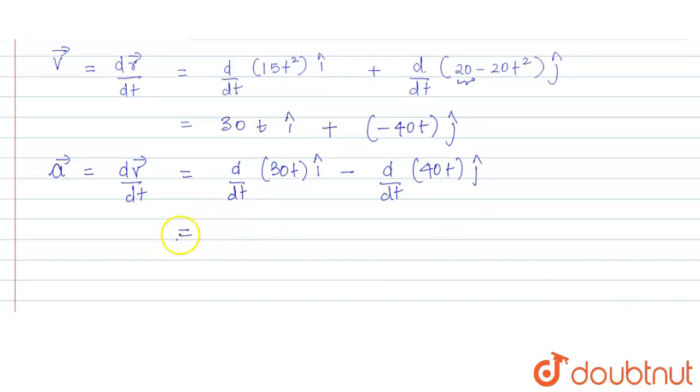So its differentiation would be 30î - 40ĵ. This is what the acceleration vector is.